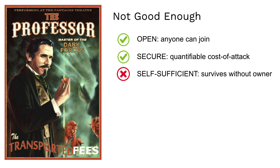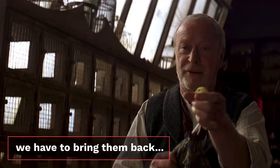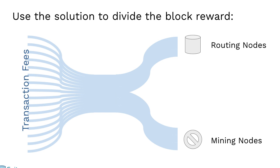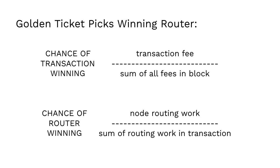Making fees disappear isn't enough — we have to bring them back. To do that, Saito uses a hash power lottery. When a block is produced, miners in the network start hashing on a random number in that block, trying to produce a hash power solution that is difficult enough. If they find one, they take that solution, put it in a transaction, and broadcast it into the network. If that solution is not included in the very next block, no one gets paid. If it is included in the very next block, we use the solution to divide up the block reward — half to the mining node that found the solution, and half to a randomly selected routing node in the network. The miner earns their share of hash power, and the router earns pay proportional to the value they brought into the network.